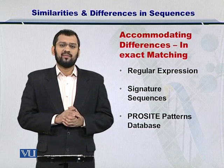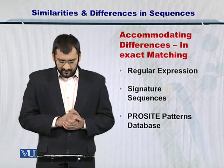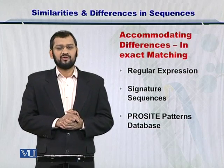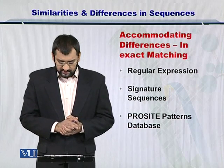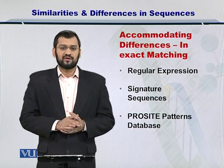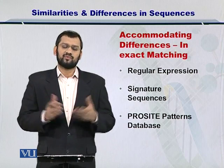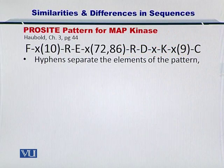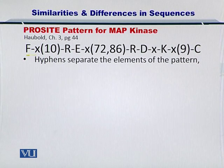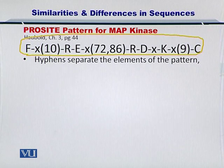Accommodating differences can be done through exact matching tools, and there are various options you can use, such as regular expressions, signature sequences, and the ProSite patterns database, which we will discuss later in detail. Let's take a look at the ProSite pattern. This is a pattern given in your textbook, chapter three, page 44.